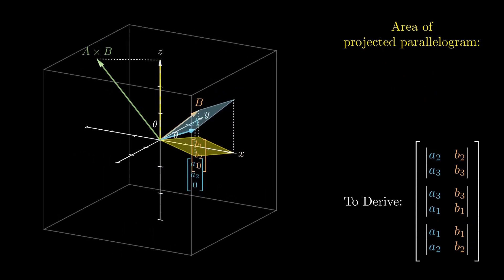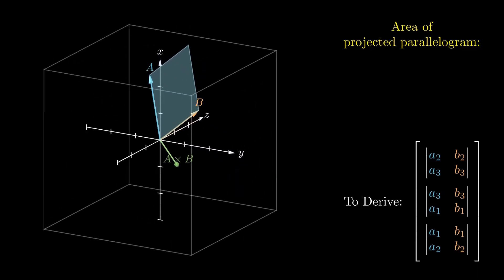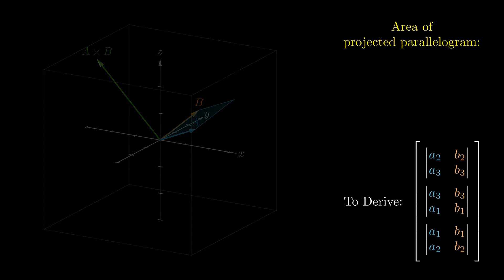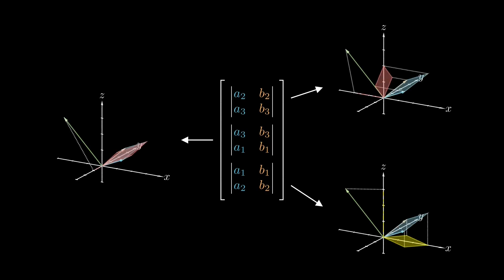For this example, I've chosen a particularly nice set of vectors where both the z component of a cross b and the projected determinant are positive. But if you can convince yourself that this holds true regardless of the orientation of the vectors, then you're basically done, since you can take advantage of the rotational symmetry of 3D space to make the exact same argument for projection onto the yz plane and zx plane. And that finally gives us our finished formula for the cross product. Each of these components corresponds to the area of a projection of the parallelogram spanned by a and b onto the perpendicular coordinate plane, which makes sense since that projection scales the area by the same factor as taking each component scales the cross product's magnitude.